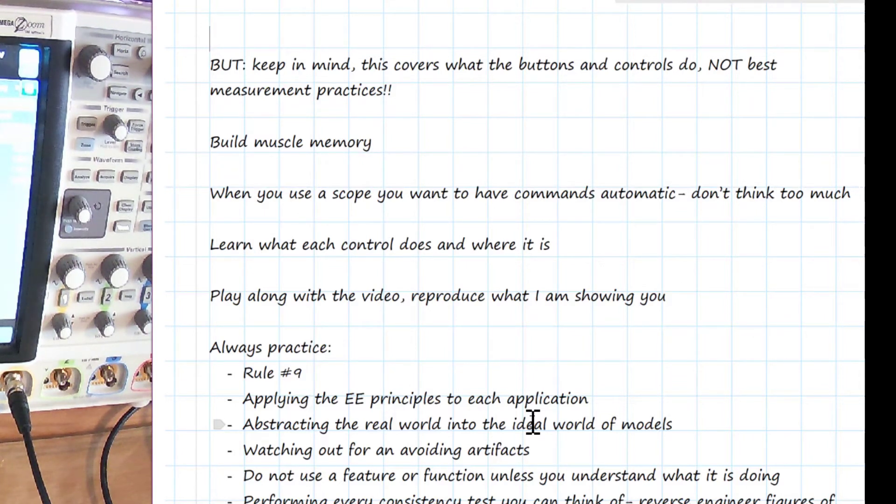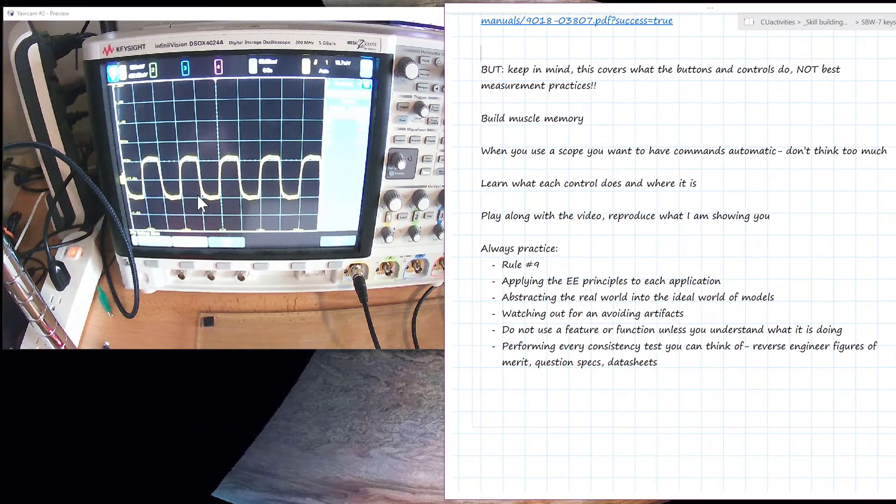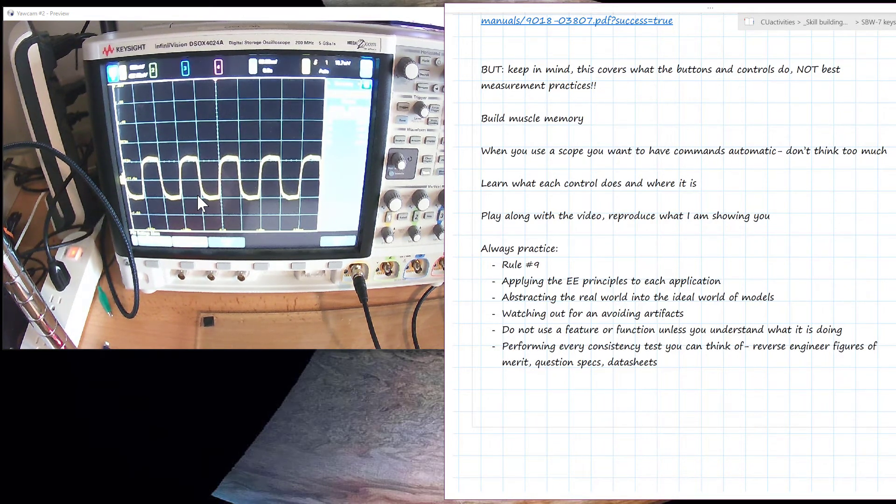When we see a waveform, a square wave for example, in order to extract the figures of merit, we're making some assumptions about how this square wave is similar to an ideal square wave and the figures of merit of an ideal square wave. Same thing with the device under test. We're going to convert the output voltage, the driver, into a Thevenin equivalent model. And so it's really important to gain practice at performing this abstracting, this transcending the real world into the world of ideal models.